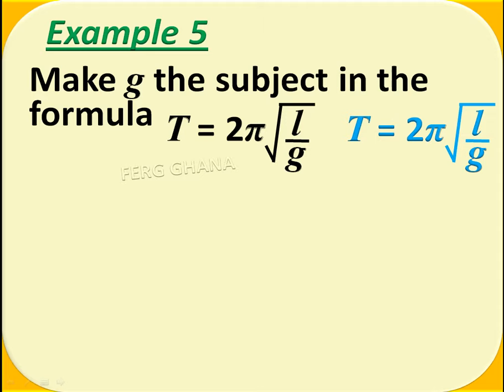T equals 2 pi multiplied by the square root of L over G. Now, we are to make G the subject, and what we have here is G is a denominator.